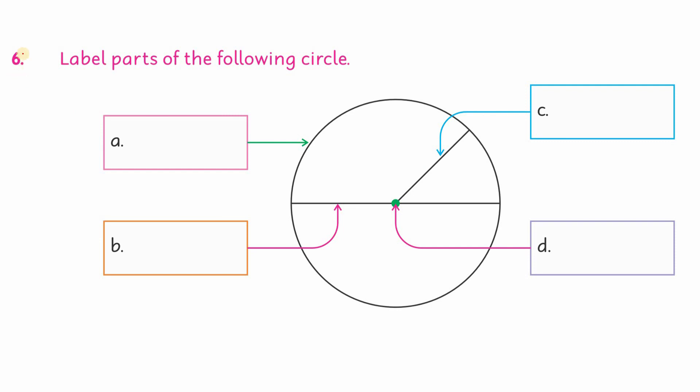Question number 6: Label parts of the following circle. You need to know the circle parts. This is the boundary. What do you call the boundary? Circumference. Circumference of the circle. Then the B-point: this is the center point touching the boundary. What do you call this line? Diameter.